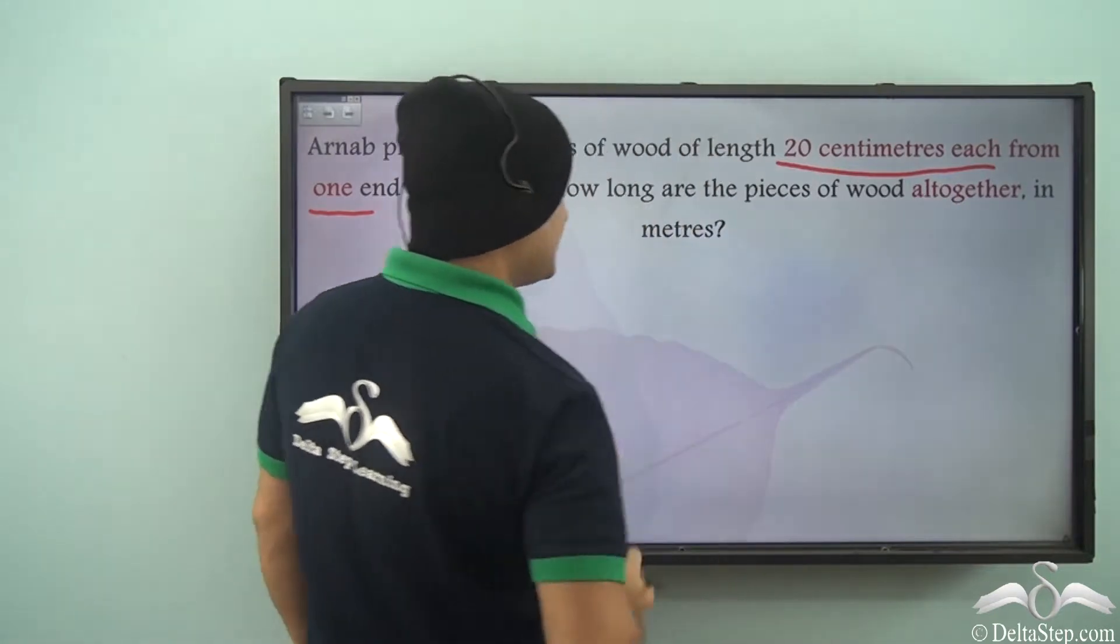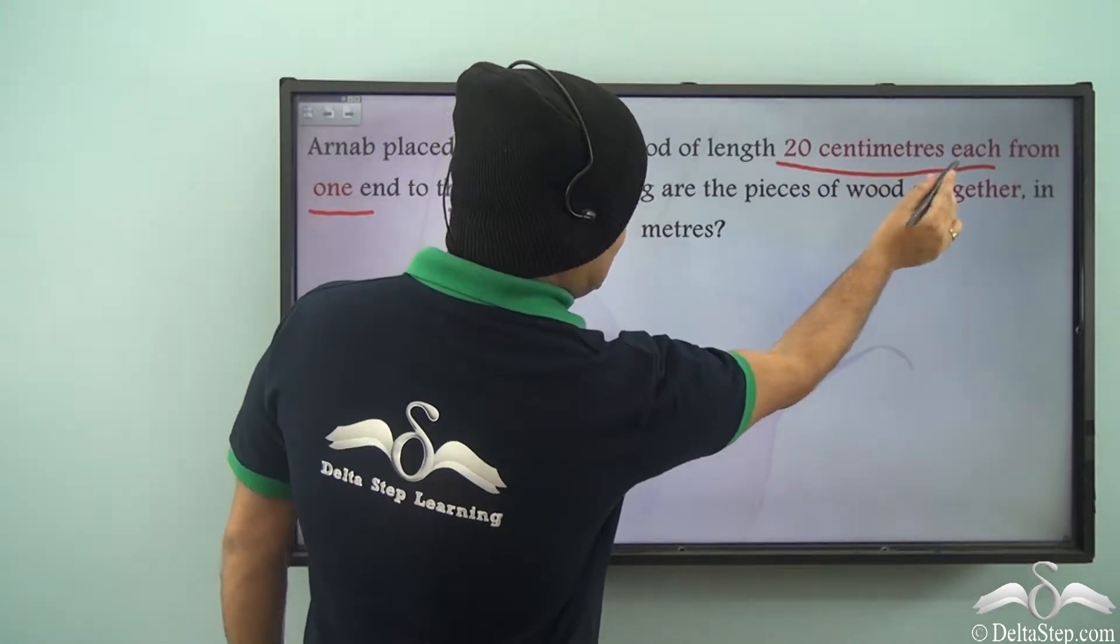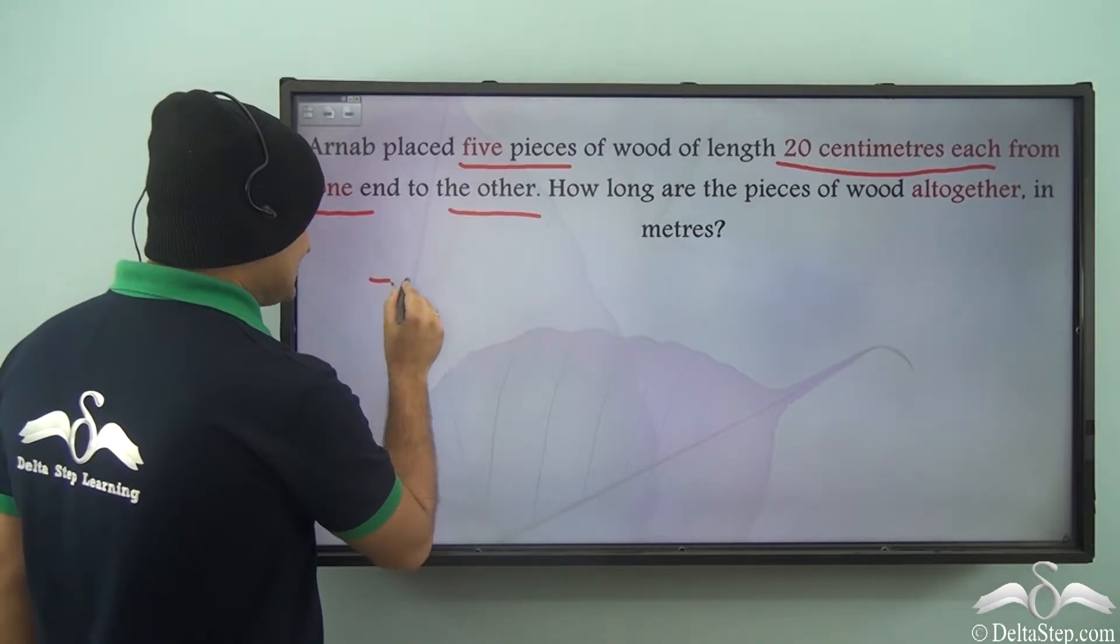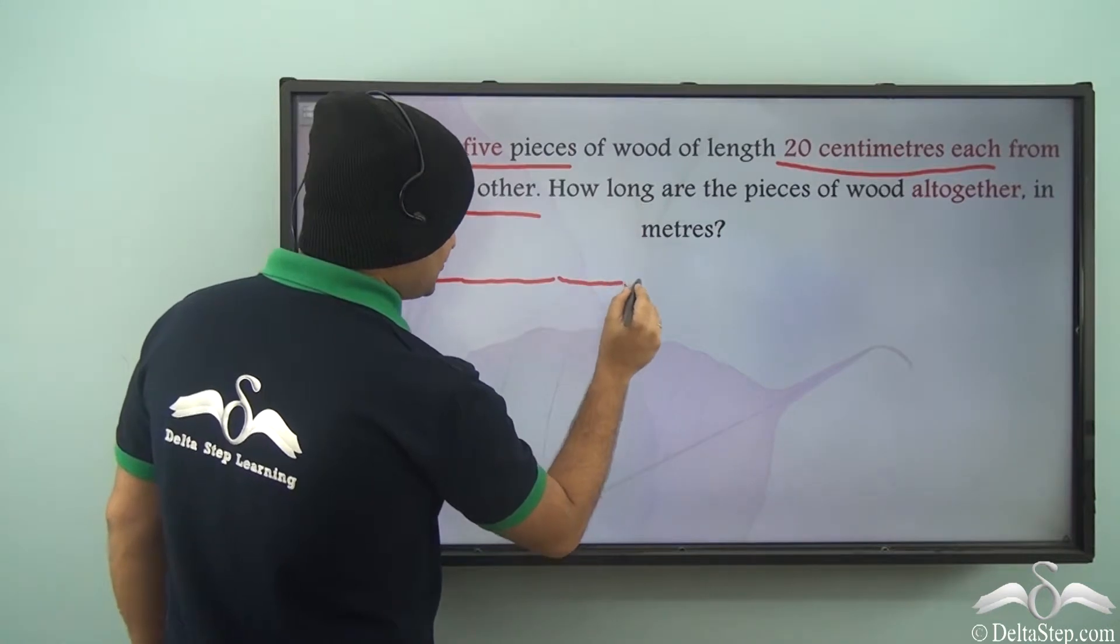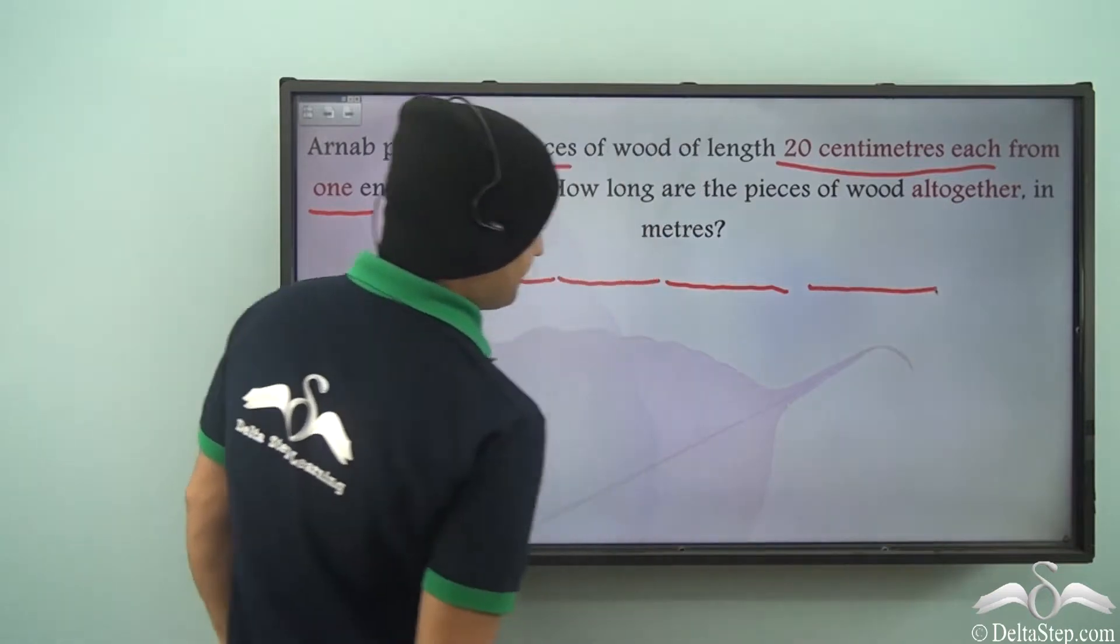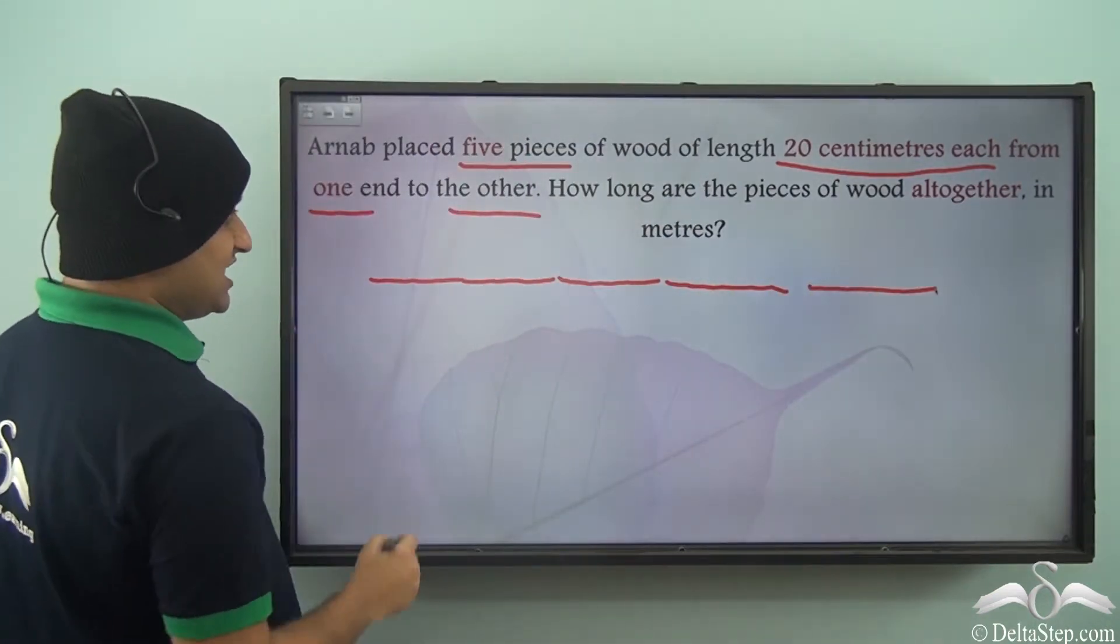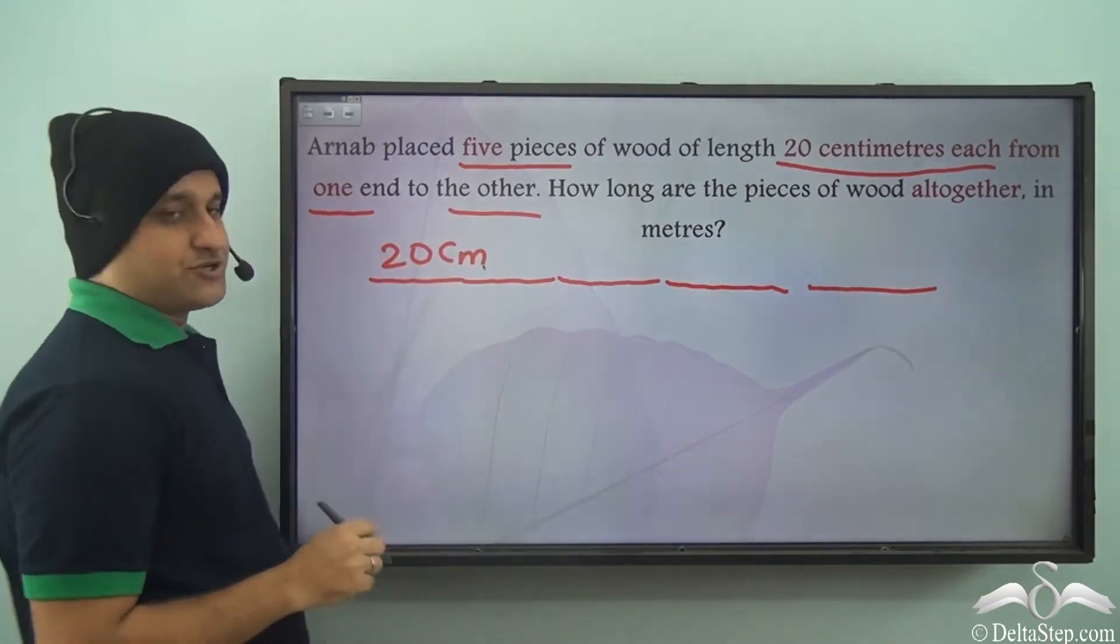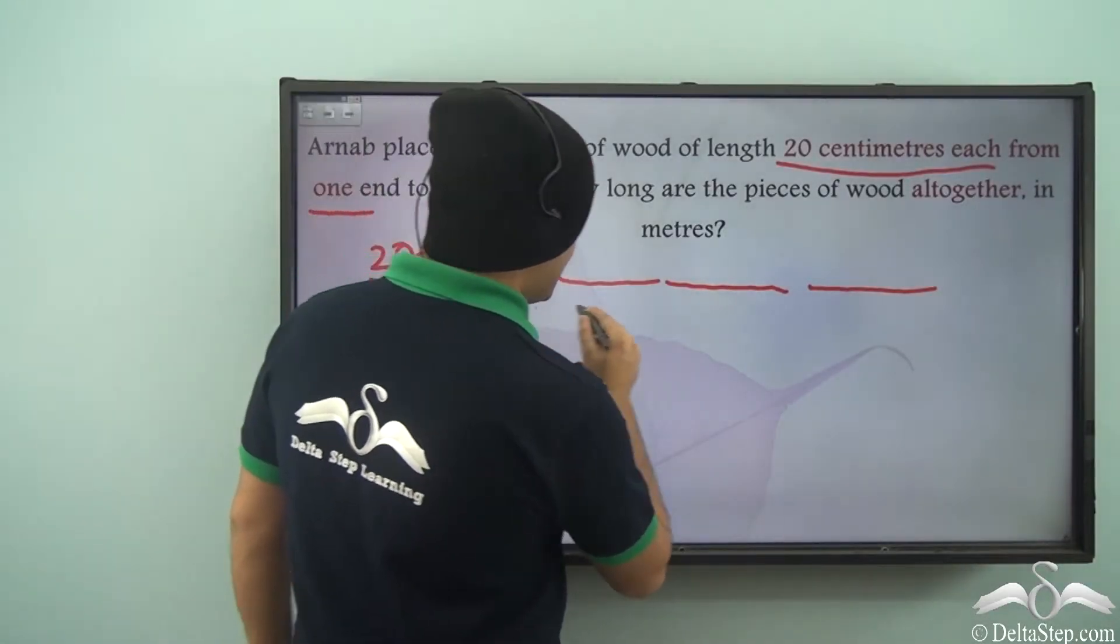He placed 20 centimeter wood pieces, five of them. So we can say one, two, three, four, and five. He placed five of them end to end, and each one of them is 20 centimeters.